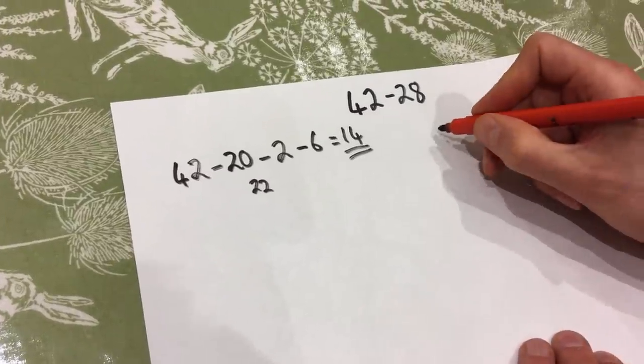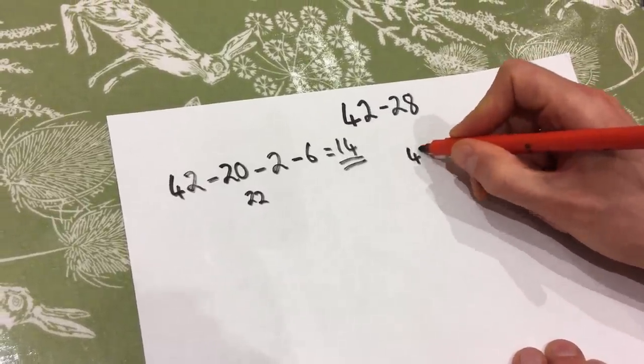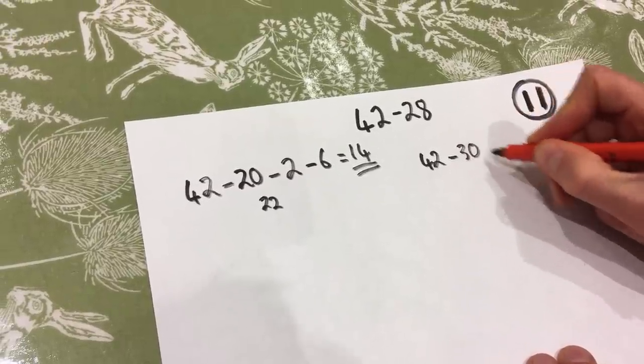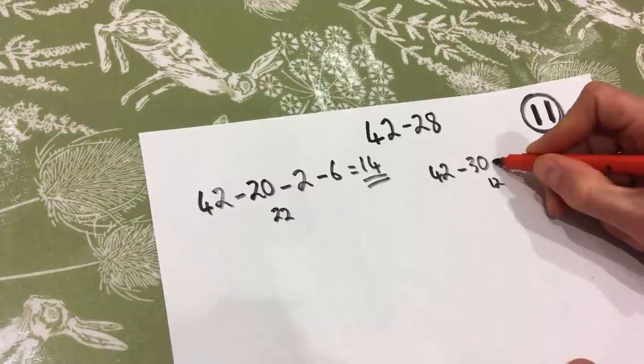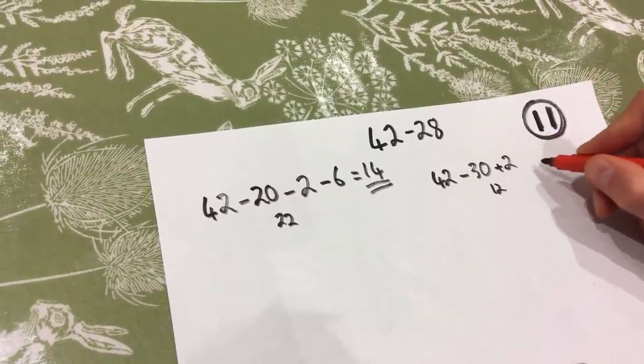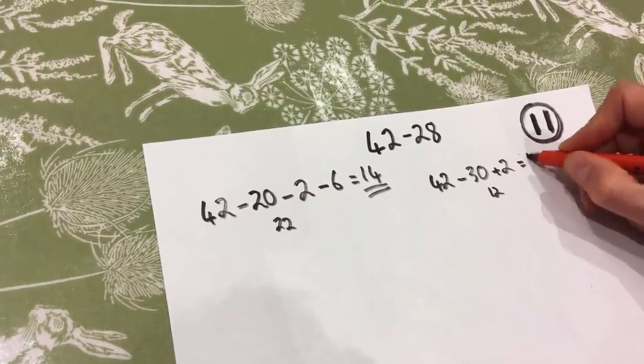Now another method that you could look at is 42 and don't take away 28, but instead take away 30, which is two too many. So that gets you to 12, and then you just need to add on that two, which was the amount extra that you subtracted, gets you to 14.